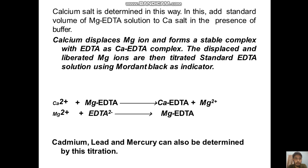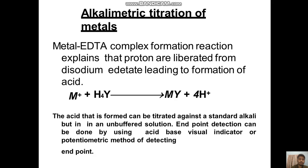For example, a calcium salt is determined by adding a standard solution of magnesium-EDTA to the calcium salt in the presence of a buffer. Calcium displaces magnesium ions and forms a stable calcium-EDTA complex. The displaced and liberated magnesium ions are then titrated with standard EDTA solution using Mordant Black as an indicator. Cadmium, lead, and mercury can also be determined by this titration.